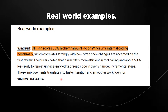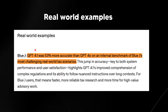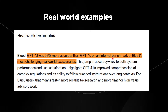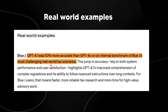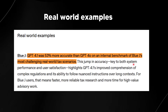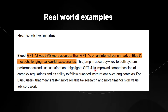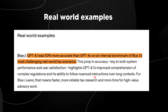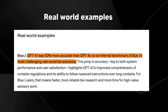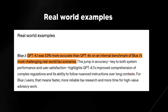Windsurf is basically an AI coding tool and assistant. We also see GPT-4.1 being 53% more accurate than GPT-4.0 on one company's internal benchmark for real-world challenging tax scenarios. This jump in accuracy — key to both system performance and user satisfaction — highlights GPT-4.1's improved comprehension of complex regulations and its ability to follow nuanced instructions over long context.